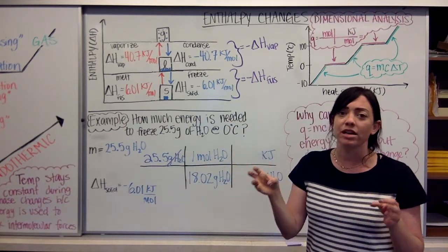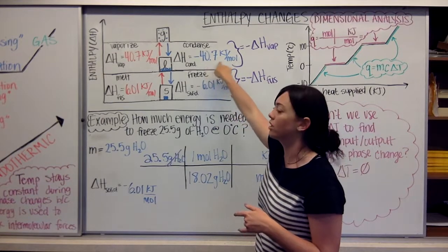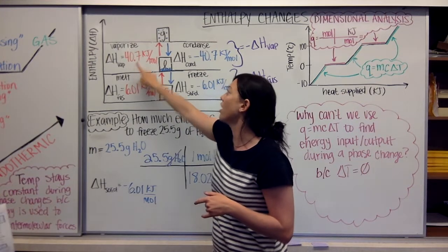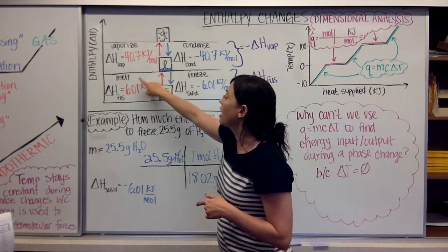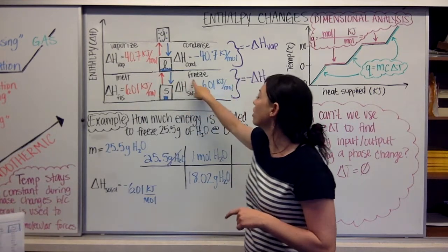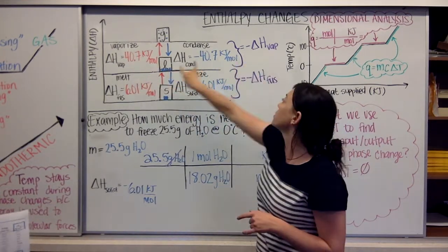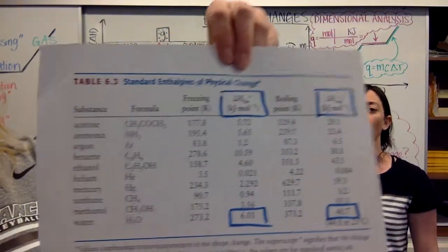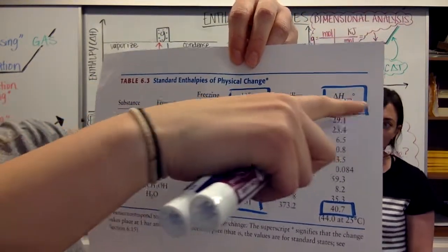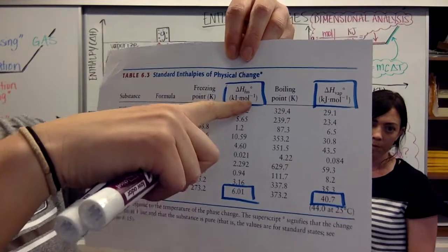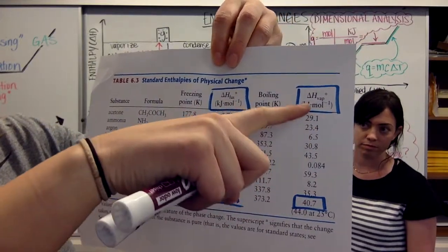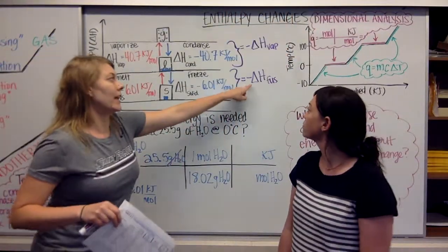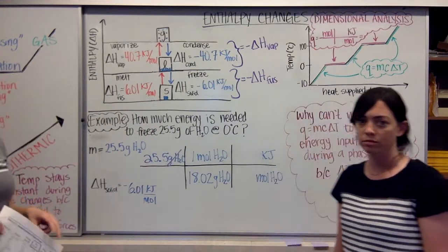If we have water vapor and it is condensing, it has to give up 40.7 kilojoules for every mole. This is referred to as our heat of vaporization when talking about vaporizing or condensing, and our heat of fusion when talking about melting or freezing. Notice that only fusion and vaporization are given — 6.01 kJ/mol for water and 40.7 kJ/mol for vaporization — and we look at the negative of each for condensation and solidification since those values aren't separately listed.